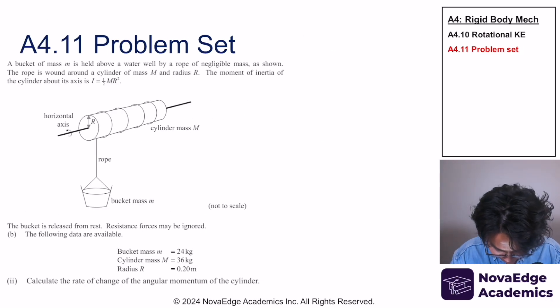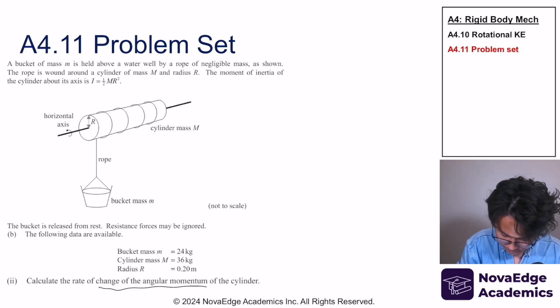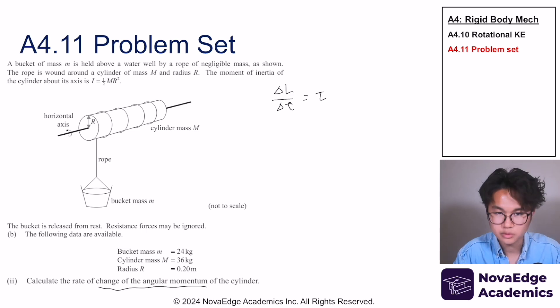This is the next part. Calculate the rate of change of the angular momentum of the cylinder. Remember that the change of angular momentum over change in time is equal to the torque. And we already calculated the torque because torque is equal to t times r. So we already know, we already did this in part one. We just have to calculate it.